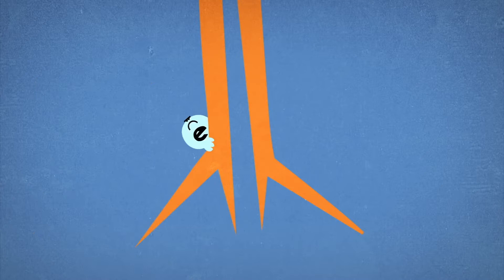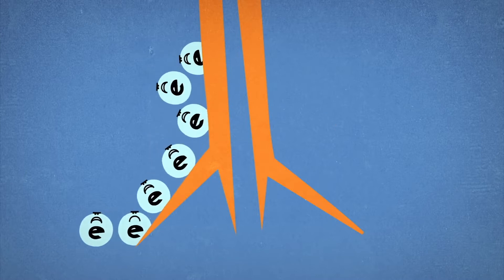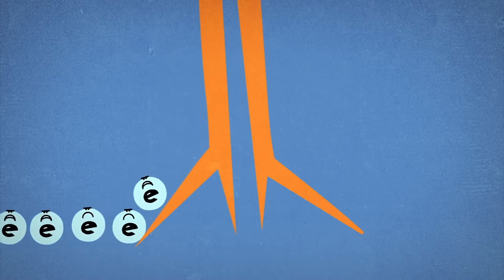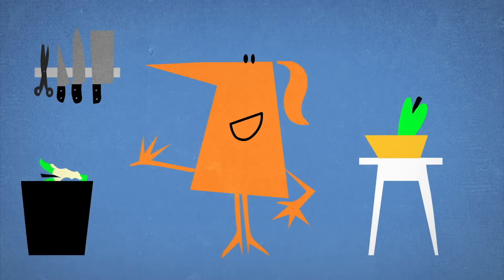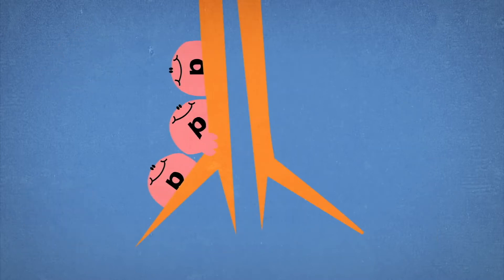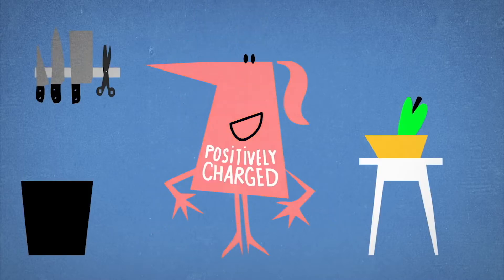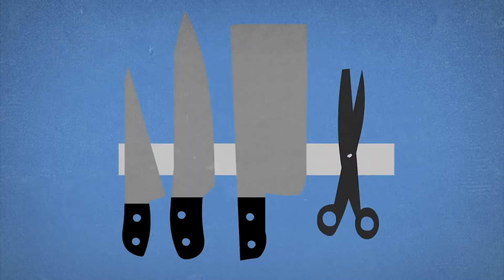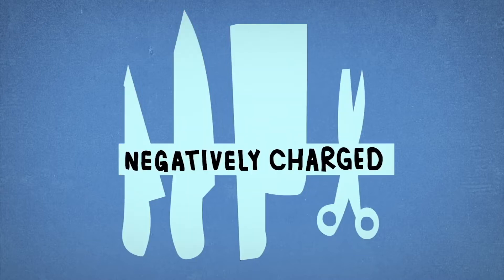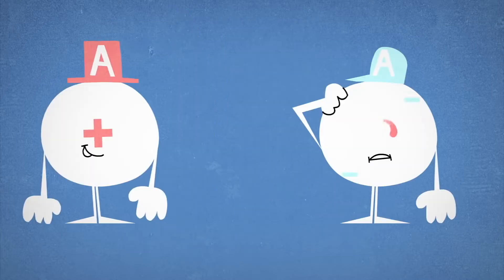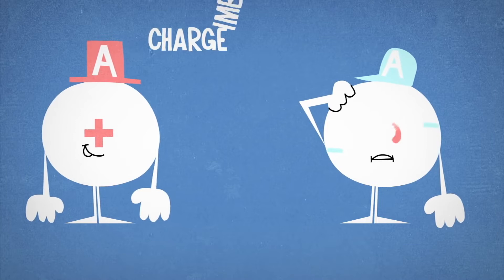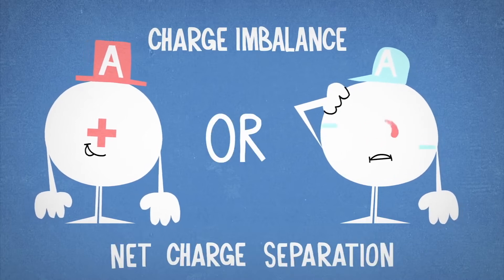But electrons are tiny and almost insignificant in mass, and rubbing or friction can give loosely bound electrons enough energy to leave their atoms and attach to others, migrating between different surfaces. When this happens, the first object is left with more protons than electrons and becomes positively charged, while the one with more electrons accumulates a negative charge. This situation is called a charge imbalance, or net charge separation.